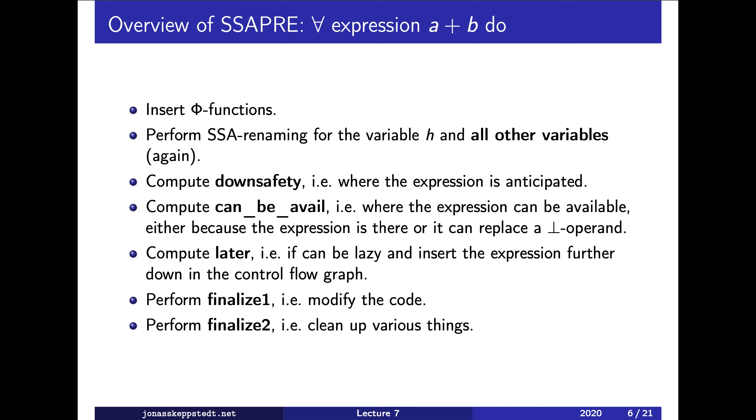Okay, so what we then do is to compute something called down safety, and the purpose of that is to be sure that we do not insert the expression unless it's certainly needed. And what we do then is to compute for which such phi functions the expression can be available.